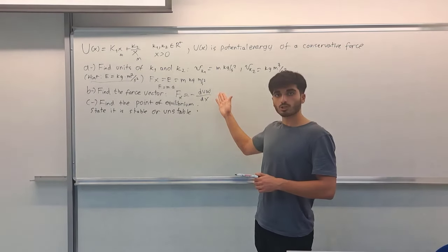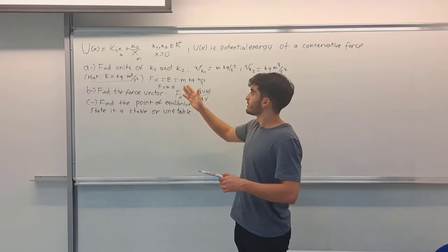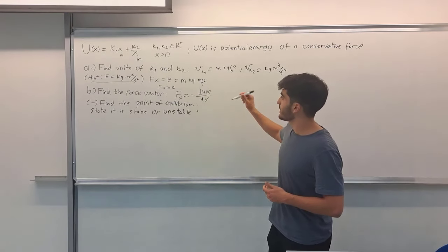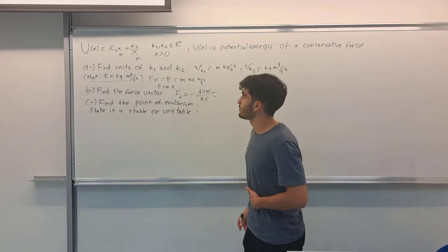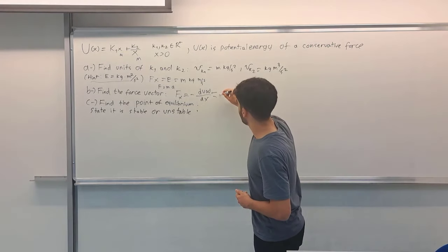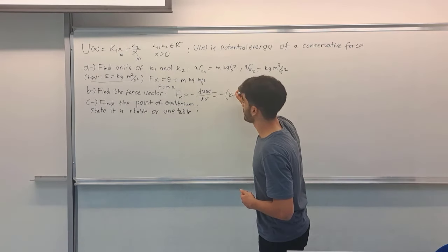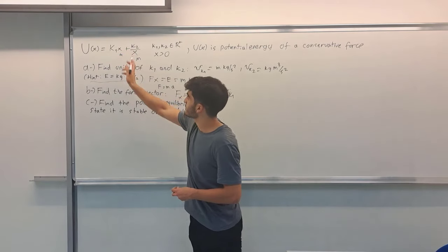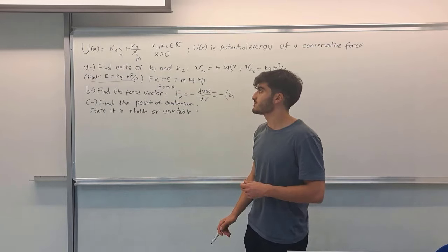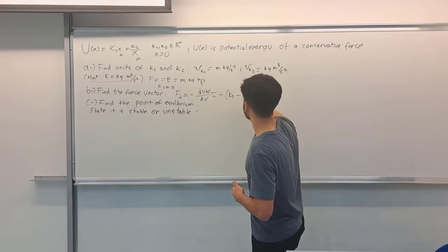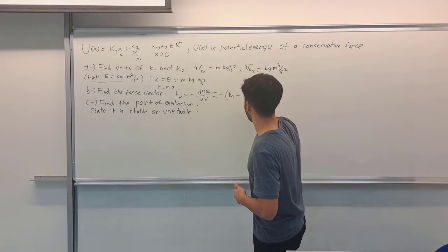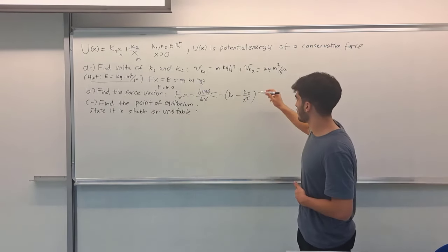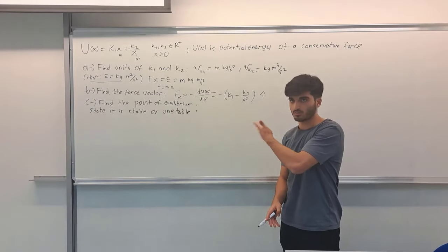So we know the potential energy function, and then we can take the derivative and multiply it with the negative sign and obtain the result. Taking derivative of x gives us minus k1. And taking derivative of 1 over x gives me minus 1 over x squared. So minus k2 over x squared is here. This is our force vector, also in the i-hat direction since it is going on x.